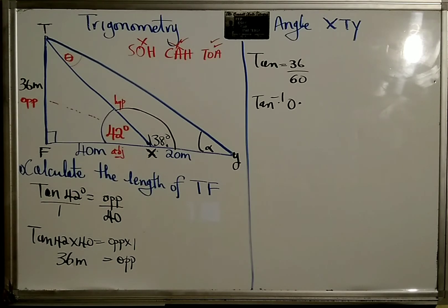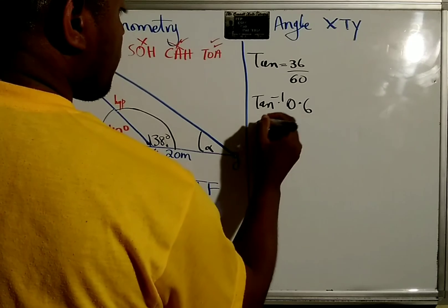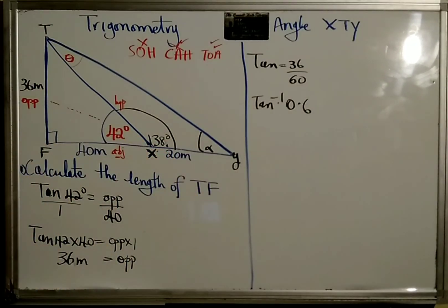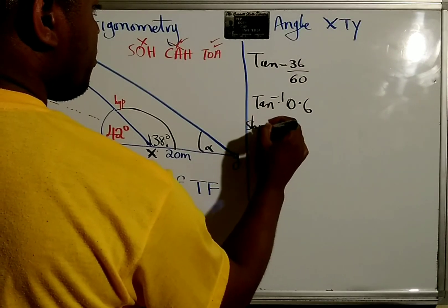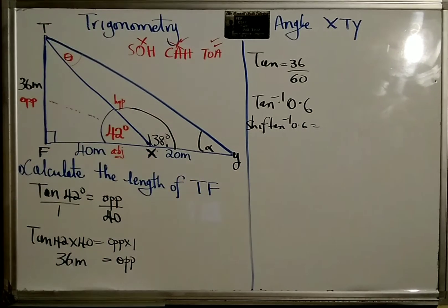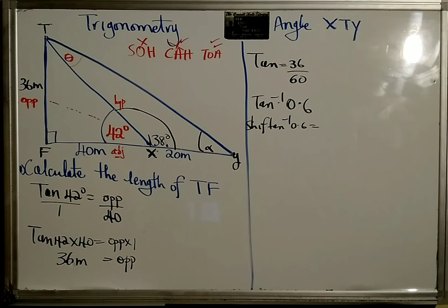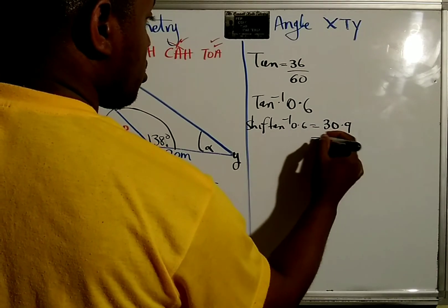And then we find the inverse. So now what you're gonna do is press shift on your calculator, press shift tan. You'll see this negative one up the top. 0.6, when you press equal, that gives you the angle. So shift tan, you'll see that negative one up the top: 0.6. This is equal to 30.9, let's call it 31 degrees.